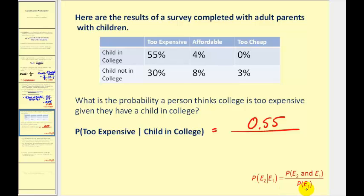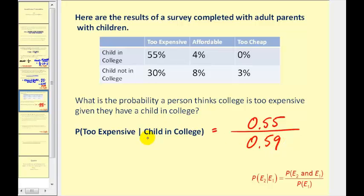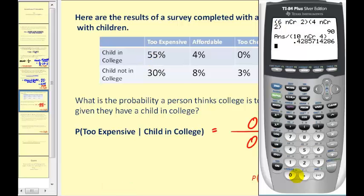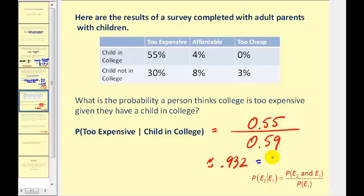We divide by the probability of event one — that they have a child in college — which covers the entire row: 55% plus 4% equals 59%, or 0.59. If we're only considering parents with a child in college, that 59% is our total, and 0.55 is the portion that thought college was too expensive. So 0.55 divided by 0.59 comes out to about 0.932, or 93.2%.